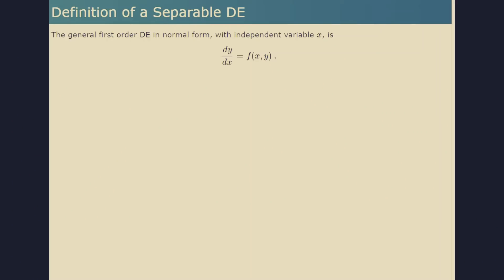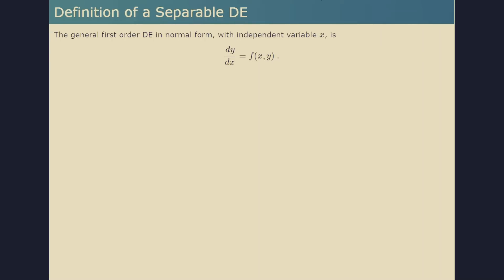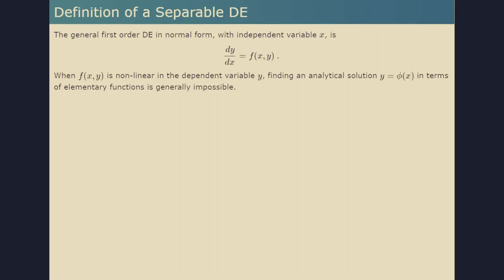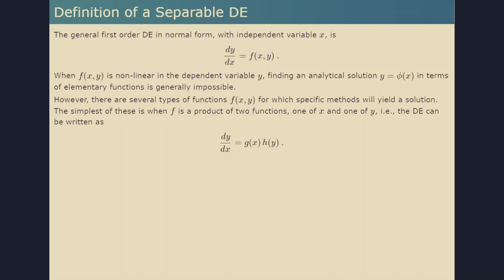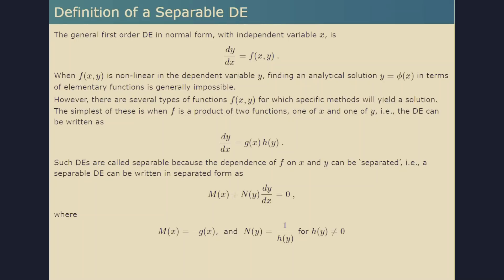What exactly do we mean by a separable DE? The general form of the first order differential equation with independent variable x is dy/dx equals f of x, y. When f of x, y is non-linear in the dependent variable y, finding an analytic solution y equals phi of x in terms of elementary functions is not generally possible. However, there are certain types of functions f for which specific methods give a solution. The simplest is when f is a product of two functions — one of x and one of y — so the DE can be rewritten as dy/dx equals g of x times h of y. Such DEs are called separable because the dependence on x and y can be separated.